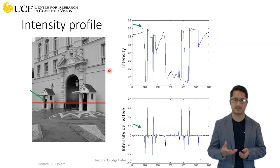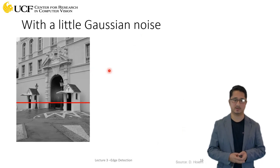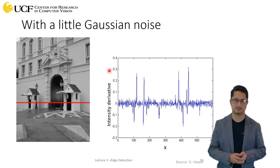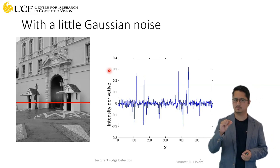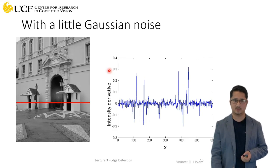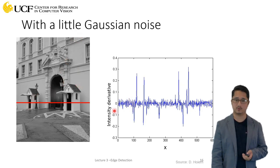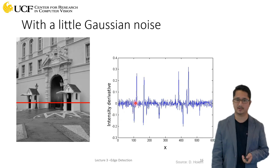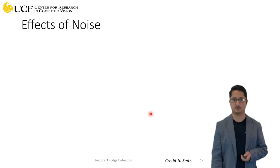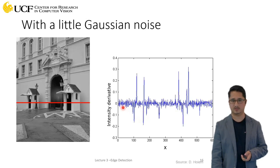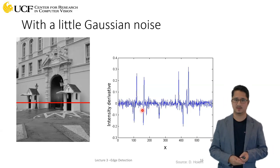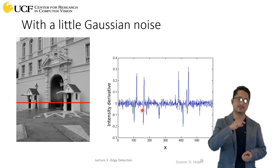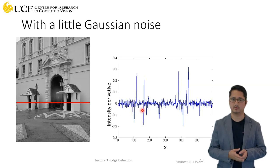Now let's add a little bit of Gaussian noise to the image. Images are actually noisy in practice. When Gaussian noise is added, each pixel has some value added or subtracted. Looking at the intensity derivative of the noisy signal, the edges we were observing earlier are gone — instead you see many peaks everywhere. Those extra peaks are due to noise causing pixel values to change in the local neighborhood, hindering detection of actual edges.